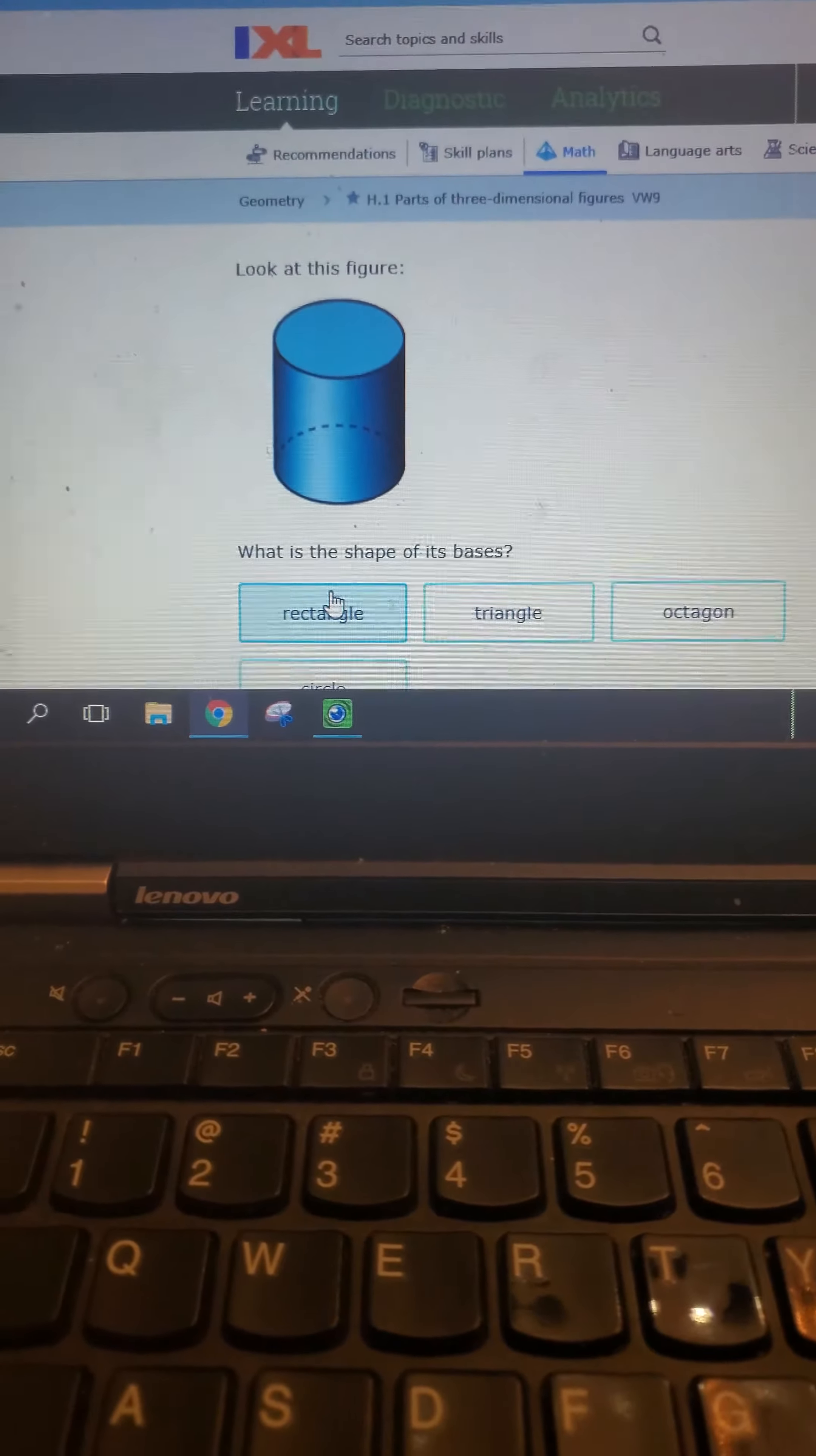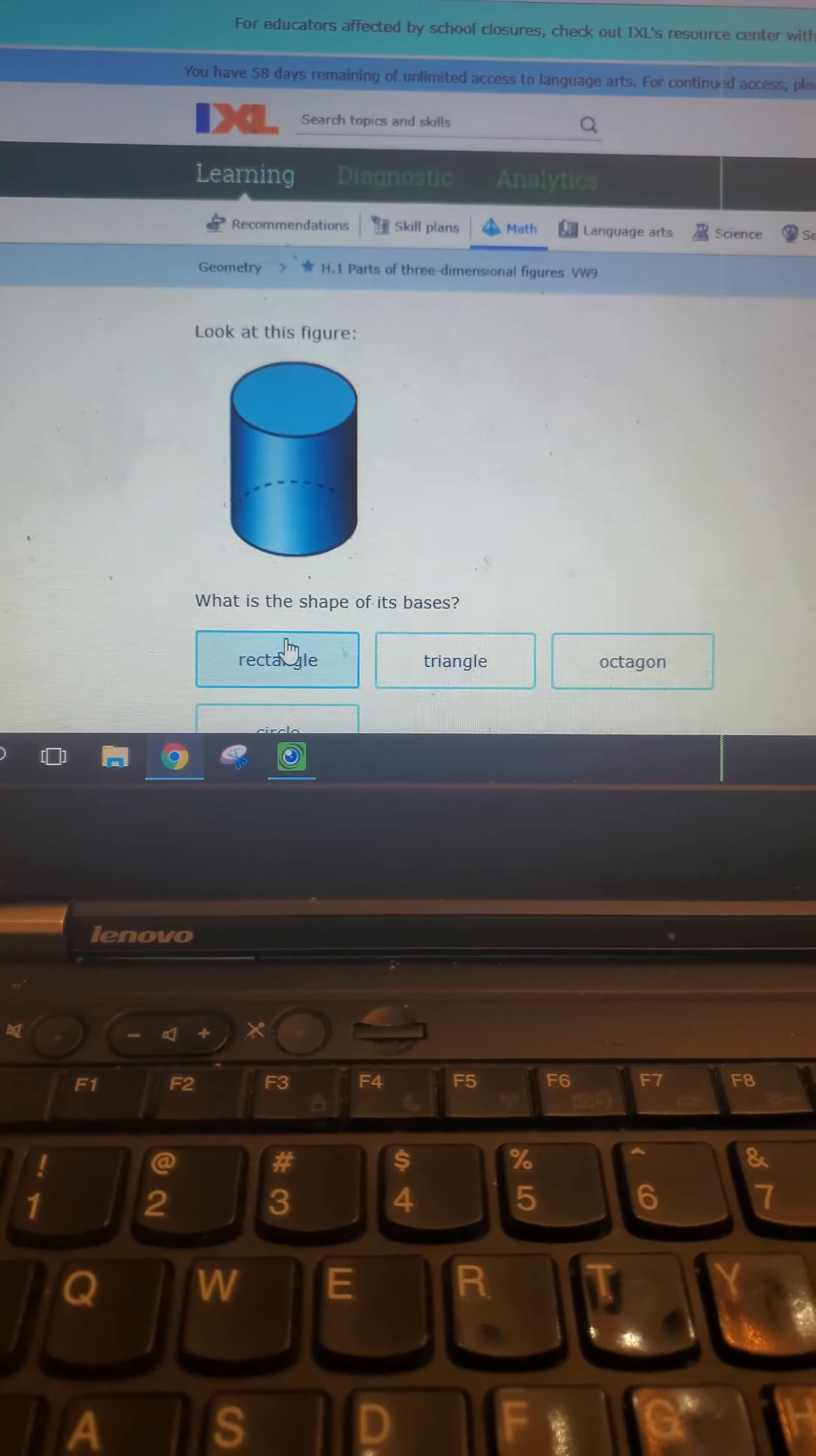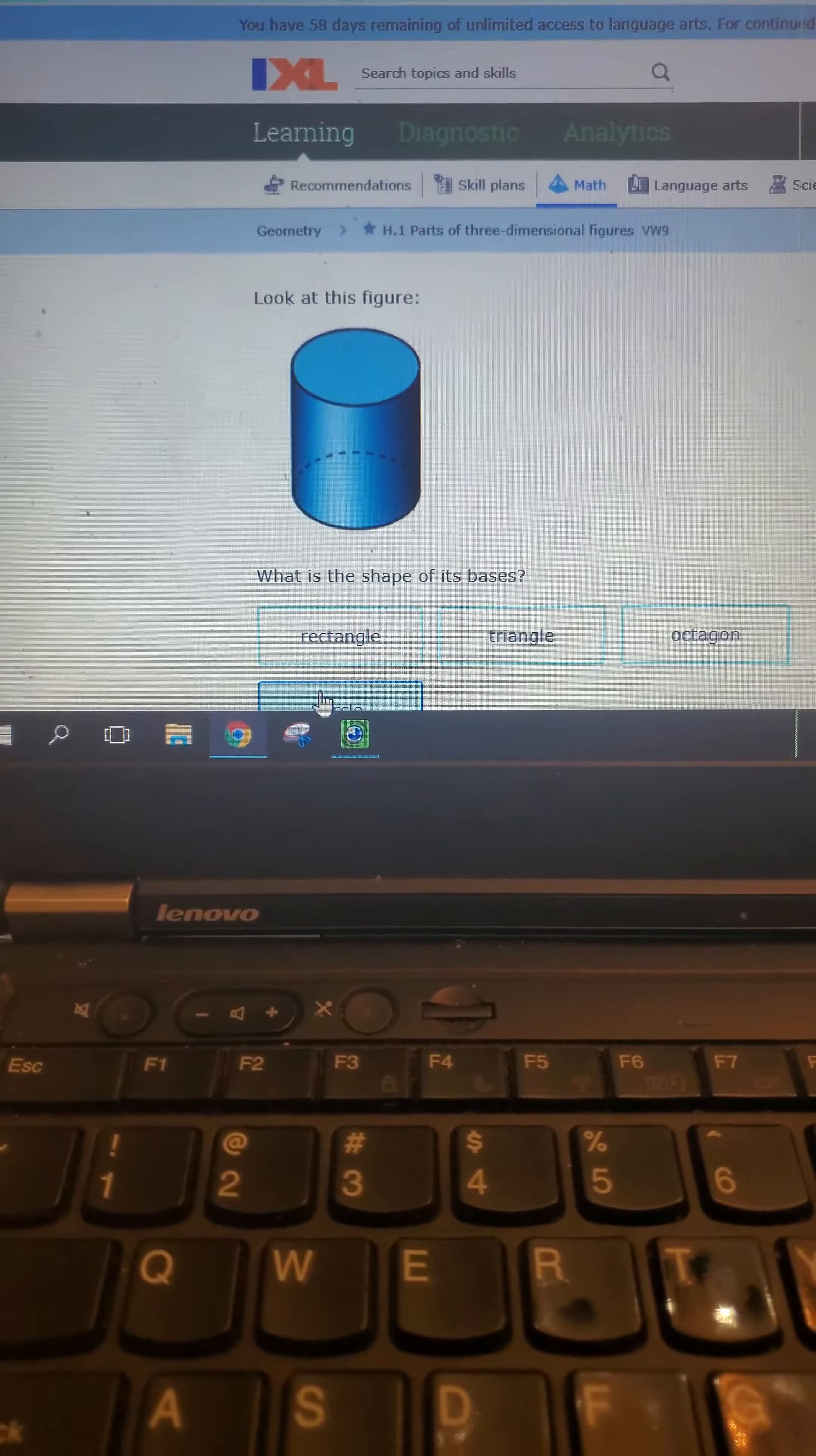This is not a polyhedron. This is just a three-dimensional figure called a cylinder. It's not a polyhedron because it has curved parts, and its base is a circle. So that's hidden down here. I'm not going to scroll down. I'm just going to choose that. That's a circle down there.